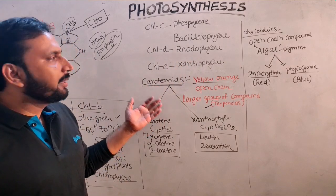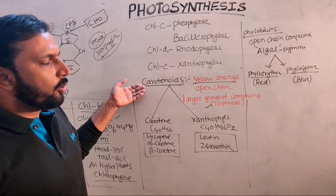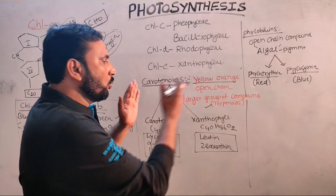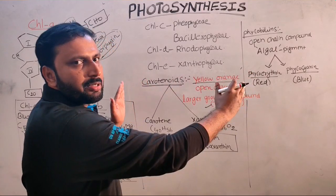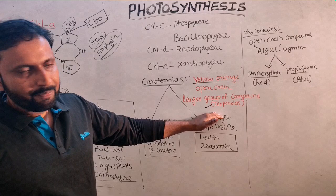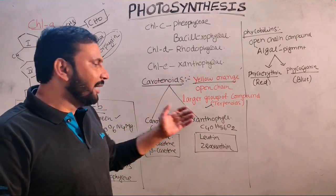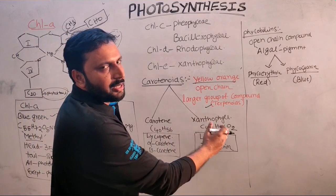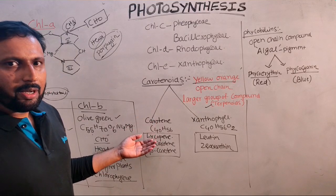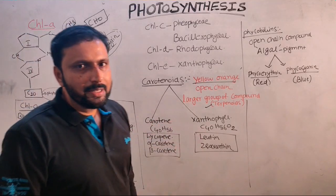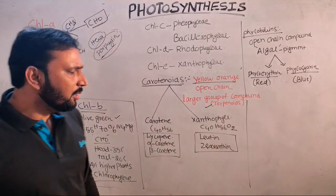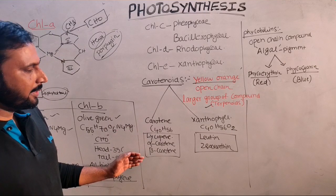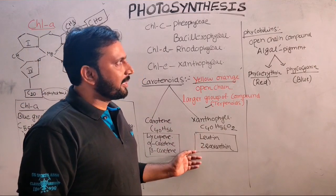Other accessory pigments are carotenoids and phycobilins. Carotenoids are yellow-orange in color and are open-chain compounds belonging to the larger group called terpenoids. Carotenoids are of two types: carotenes and xanthophylls. Carotenes are hydrocarbons with formula C40H56, whereas xanthophylls are oxygenated hydrocarbons with formula C40H56O2. Examples of carotenes are lycopene, alpha-carotene, and beta-carotene. Examples of xanthophylls are lutein and zeaxanthin.